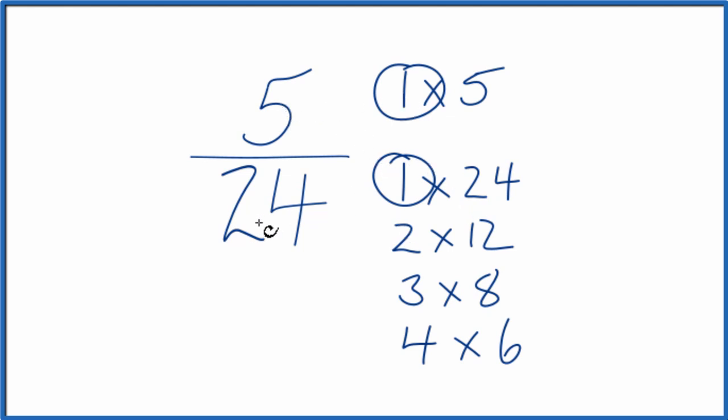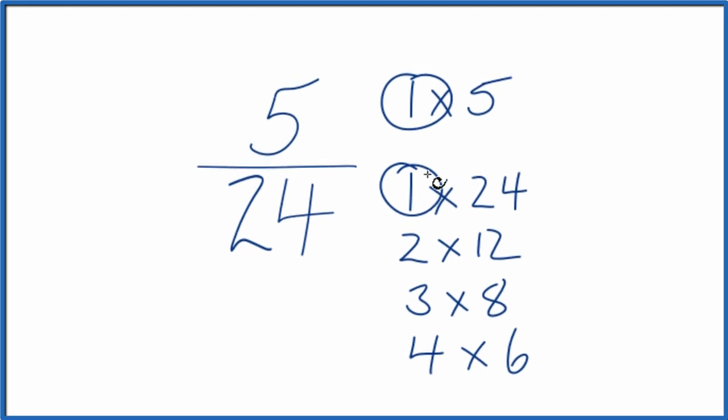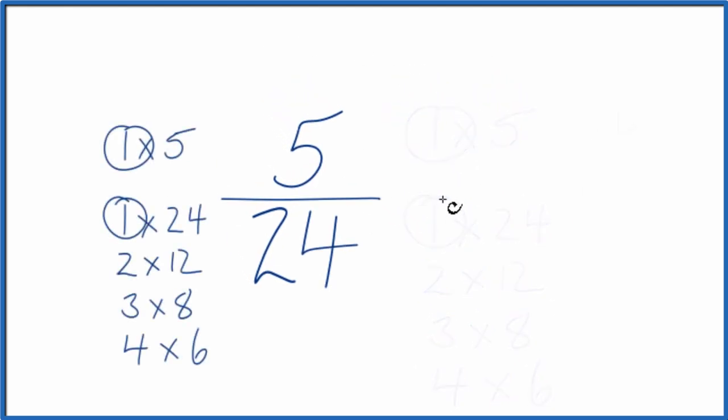So we'll divide 5 by 1, 24 by 1, to simplify 5 24ths. Let's move these over here. 5 divided by 1, that's 5, 24 divided by 1 is 24, and we're right back where we started.